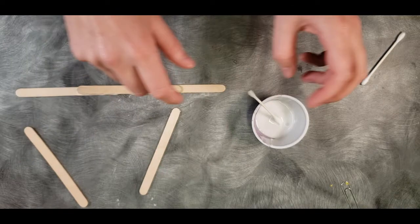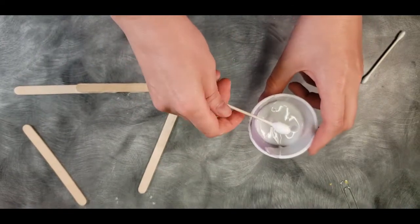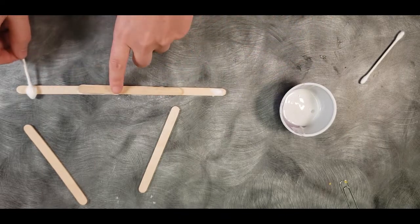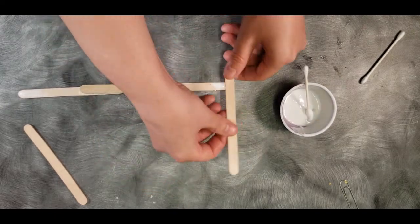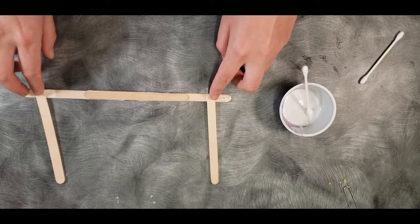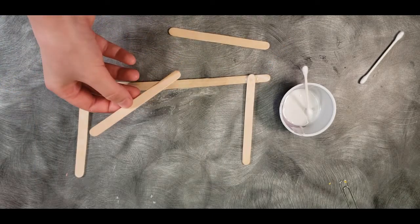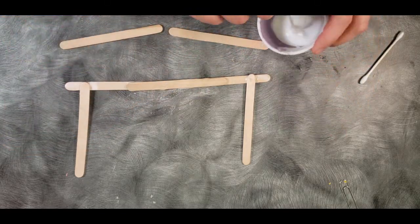Then, get two more craft sticks and glue them as verticals on either side of your long stick. Then, take your last two craft sticks and glue them on as angular supports.